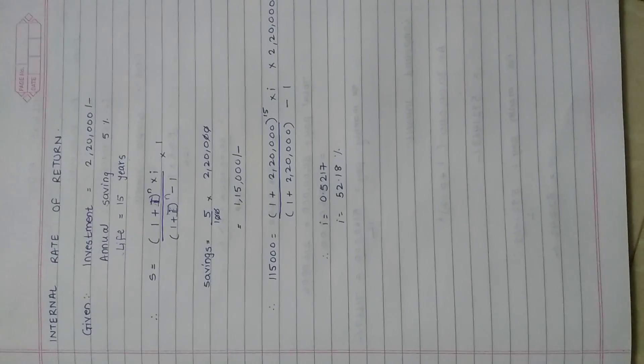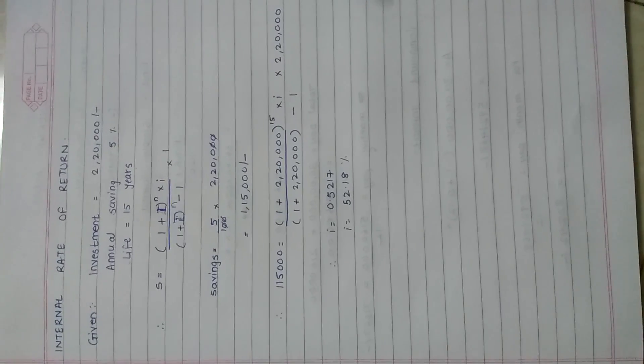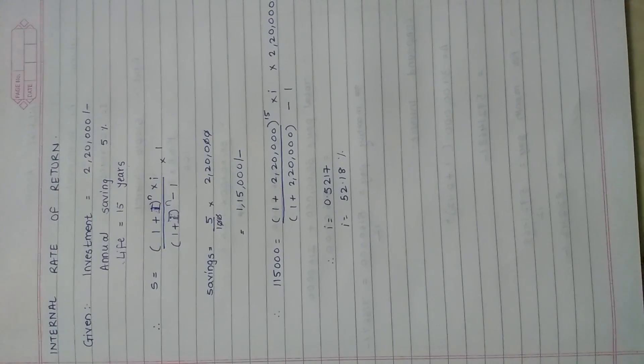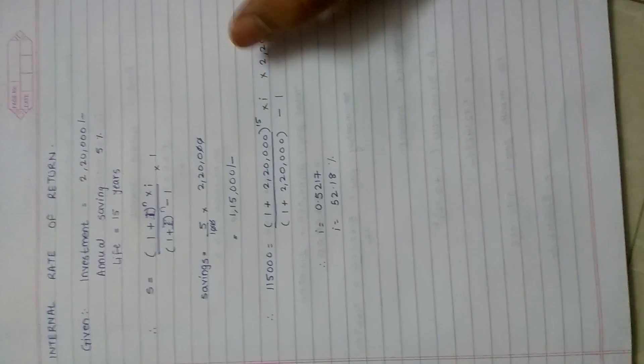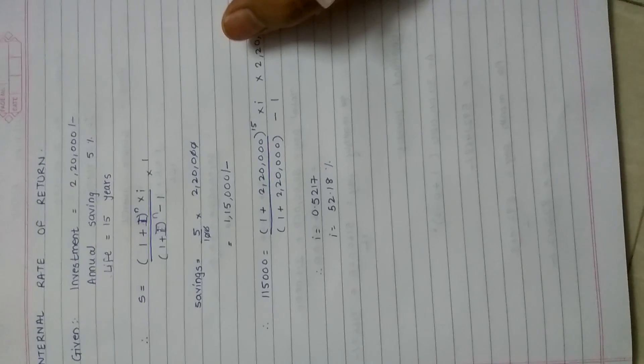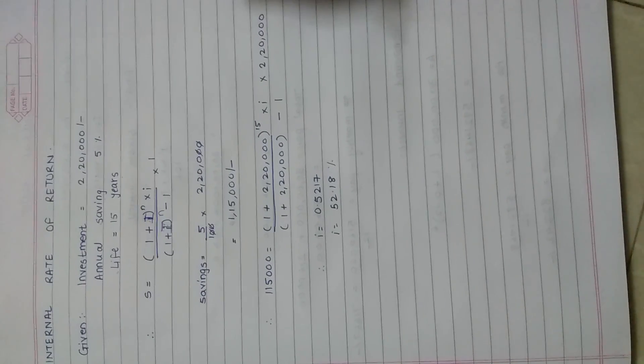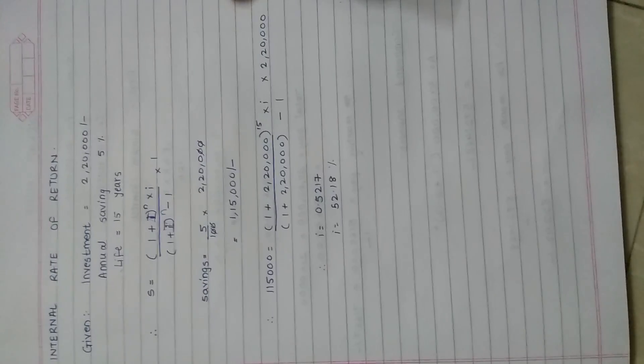So these are the three types of numericals, the initial three simple numericals for energy audit. They are present in the rear end of the last pages of your book. I prefer using Tech Easy publication which is really good for theory as well as numericals. I'll continue the remaining numericals in the next session. Please stay tuned and keep subscribing. I hope to see you in my next video.